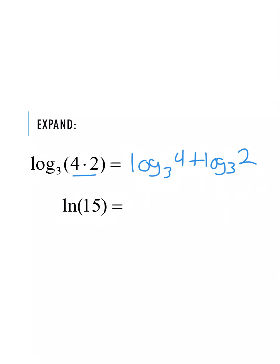For our second example, we have the natural log of 15. We need two different terms that multiply together to equal 15, so we'll go with 3 times 5. Since we're multiplying those two things together, when we expand this out we get the natural log of 3 plus the natural log of 5. Note that negative values are not part of the normal domain for logs, so we use positive 3 and positive 5.